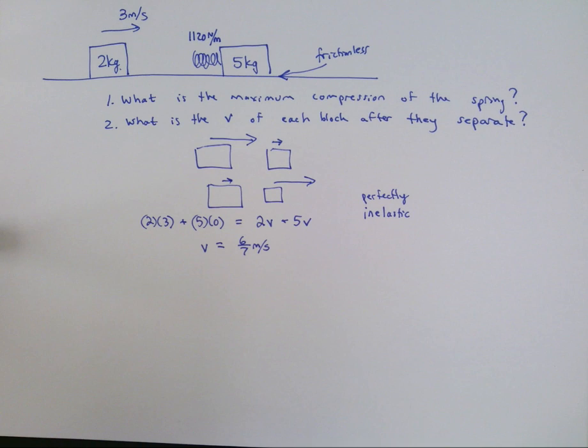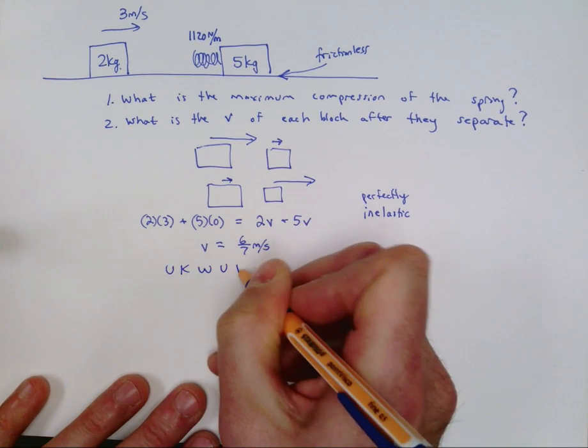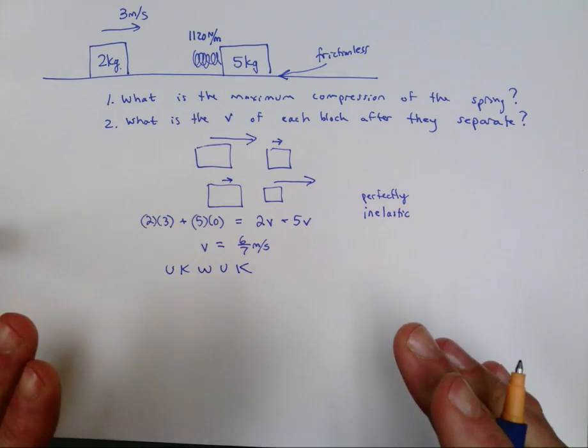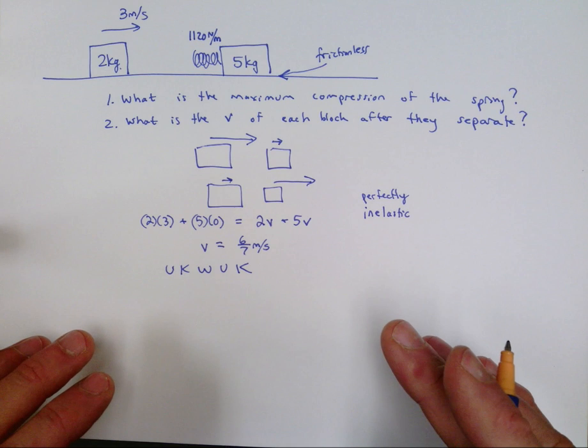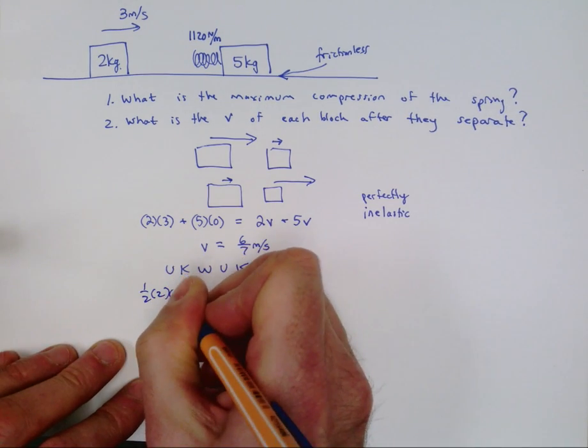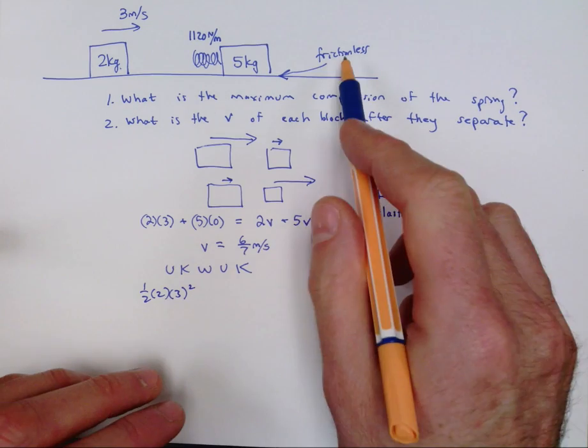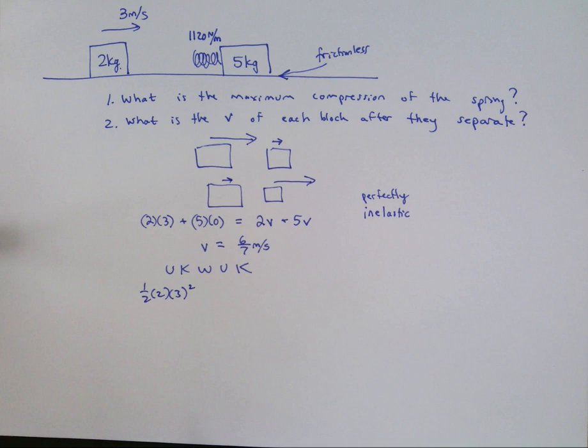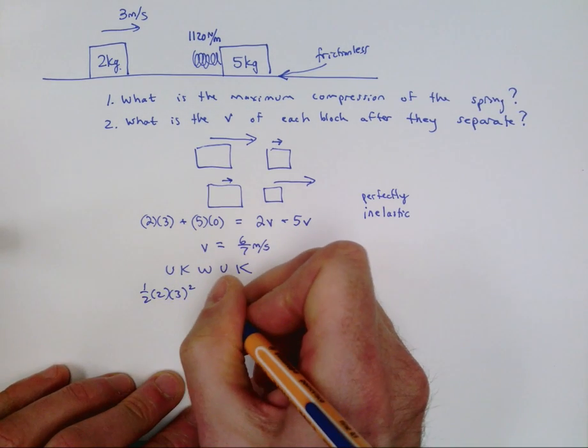Okay, now that we know what that speed is, we can use the law of conservation of energy, or what I like to call UQWK. So before the collision, the only type of energy we have is the kinetic energy of the incoming block, and so that's one half mv squared. We're not going to worry about the W here because there's no friction. We always assume that springs are ideal, which means there's no losses to heat or friction due to the spring. So we don't have any non-conservative forces.